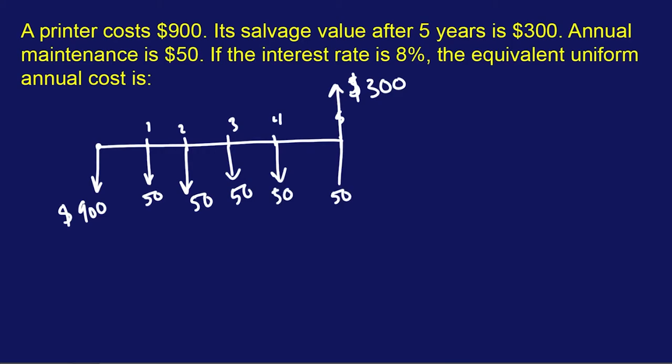So my goal is to transform this cash flow diagram into something that's annual. What I want to do is split this up, so we have something that looks like this. This is going to equal - something like that. This is going to be fifty dollars. This is our cash flow diagram for our maintenance, so that's one.